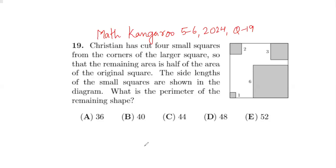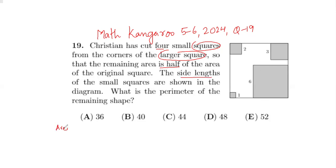Christian has cut four small squares from the corners of a larger square so that the remaining area is half of the area of the original square. The side lengths of the small squares are shown in the diagram. What is the perimeter of the remaining shape?